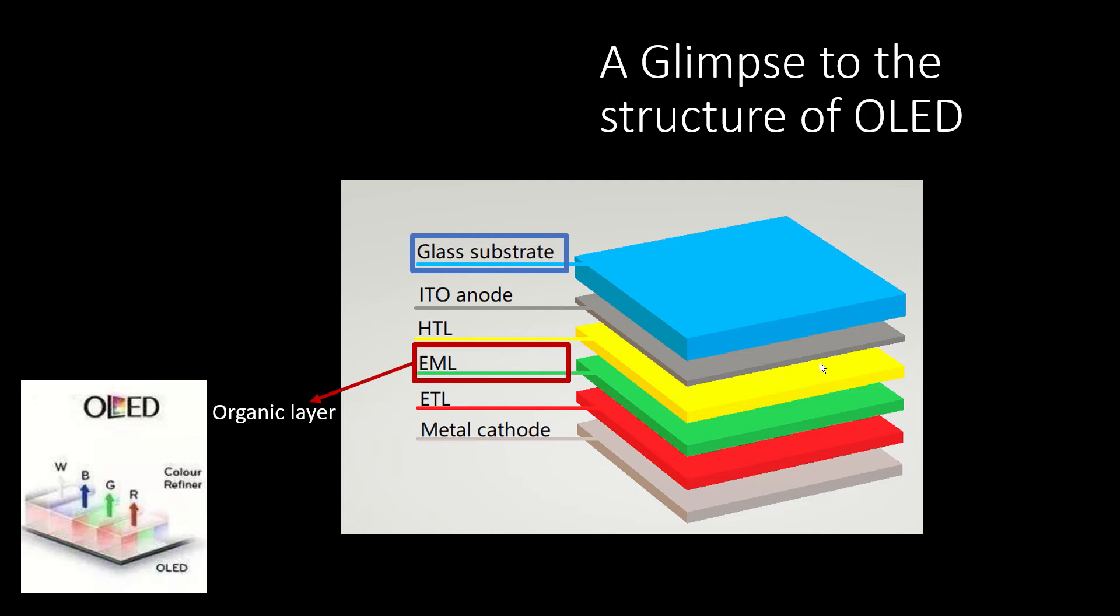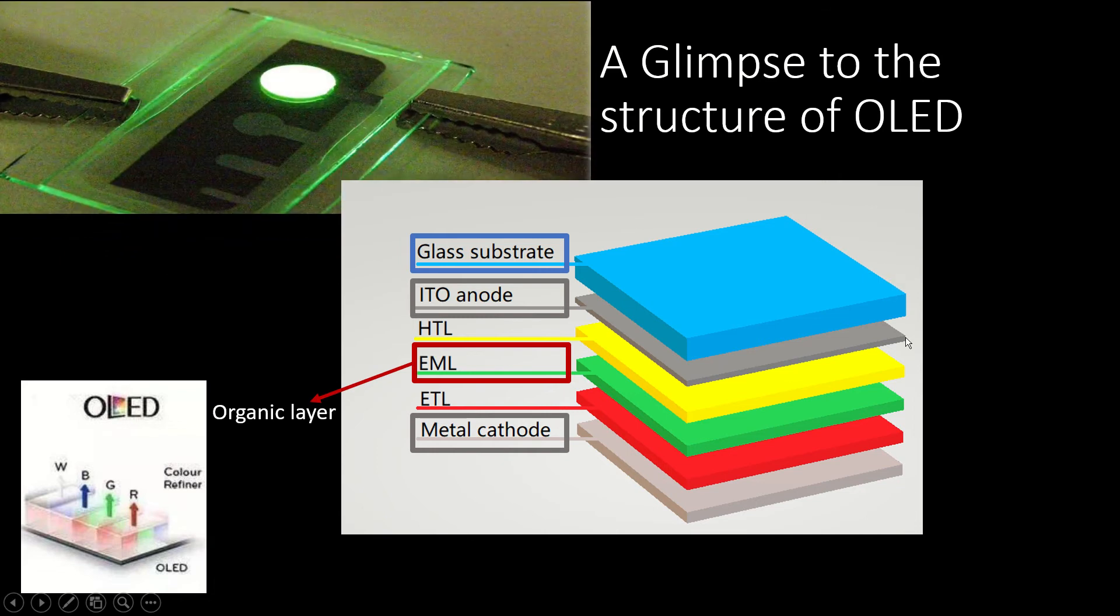The anode and cathode should follow the design that allows electrons and holes to reach their suitable energy level for recombination. While the hole transport layer and electron transport layer act like the medium for smoothing the carrier's transportation.